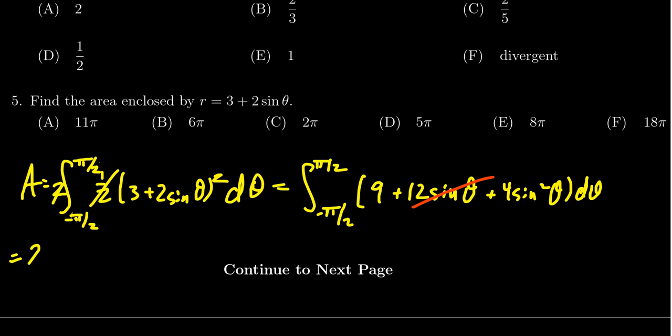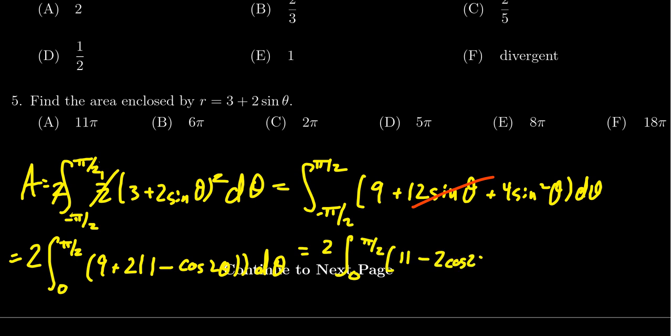So I can rewrite this as two times the integral from zero to pi halves. That's kind of nice. I'm going to have to apply the half angle identity on this four sine squared there. So in which case, we're going to get a nine plus four times one half, which will give us a two. And then you're going to get one minus cosine of two theta d theta. So then we get the nine plus two is going to give us eleven, eleven minus two times cosine of two theta d theta. We're now ready to integrate this thing.